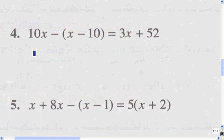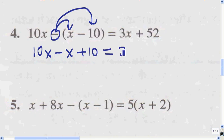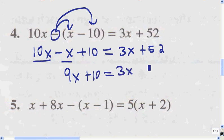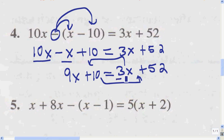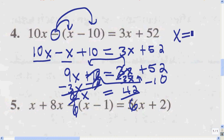Again, we've got to get rid of the parentheses first. So I write 10x, and this negative in front of the parentheses means I multiply it by everything inside: a negative times a positive x gives a negative x, and a negative times a negative 10 gives a positive 10. That gives 3x plus 52. Combining like terms, 10x minus x is 9x, so 9x + 10 = 3x + 52. Subtracting 3x from both sides gives 6x, and subtracting 10 from both sides gives 42. Dividing by 6, x equals 7.